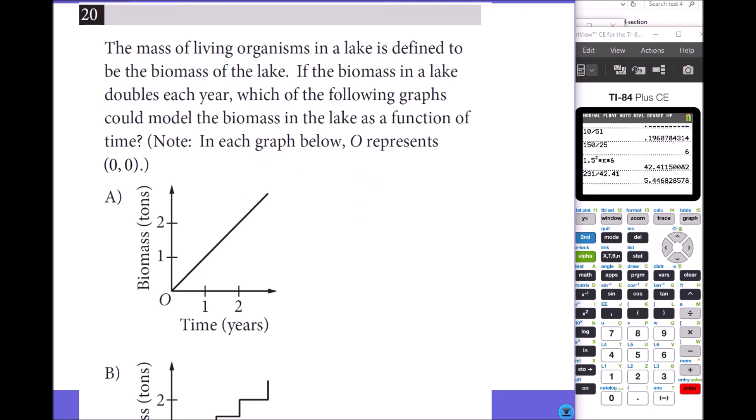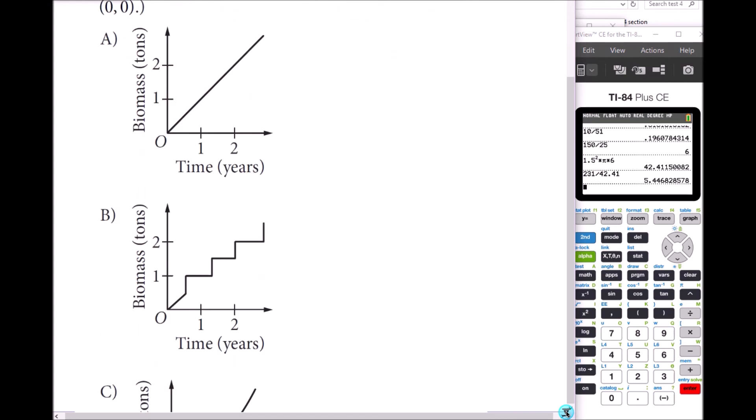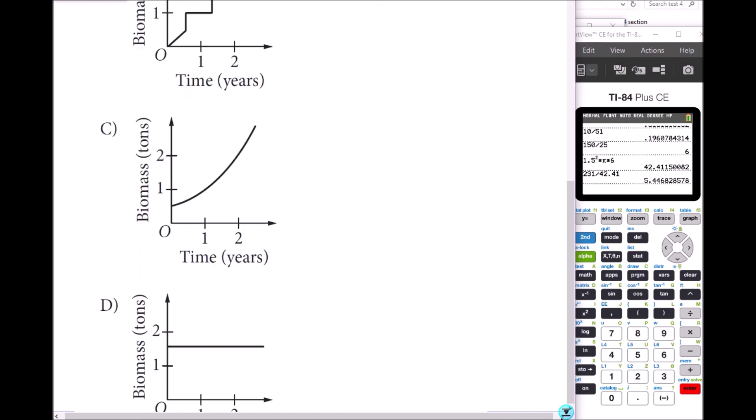Number 20: The mass of living organisms in a lake is defined to be the biomass of the lake. If the biomass in the lake doubles each year, which of the following graphs could model the biomass in the lake as a function of time? Doubling is exponential growth, right? So it's C.